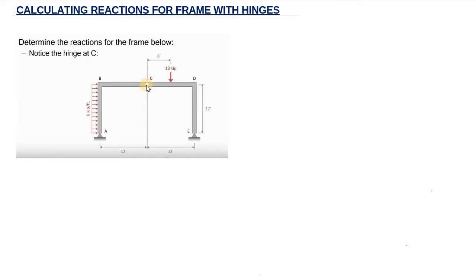You need to make an assumption on the direction of these forces. We are going to say all the vertical forces are acting upward while all the horizontal forces are acting to the right. If we have a positive value, our assumption is right. But if we have a negative value, our assumption is wrong and they are acting in the opposite direction.